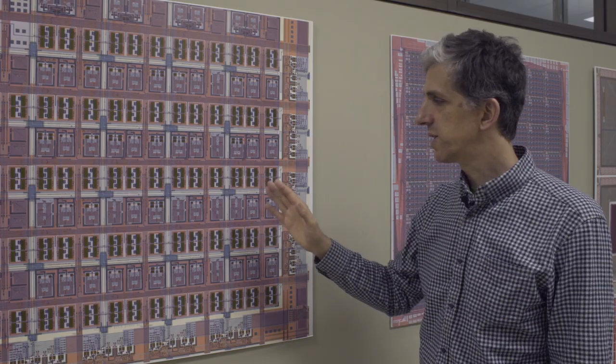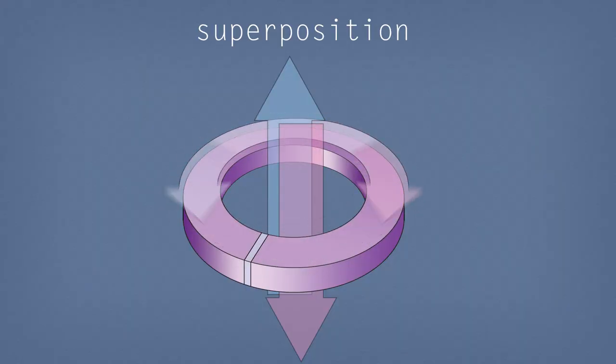Of course a qubit can be in a superposition of zero and one and so in this case that means that these qubits can be in a superposition of those two circulating current states going clockwise and counterclockwise at the same time.